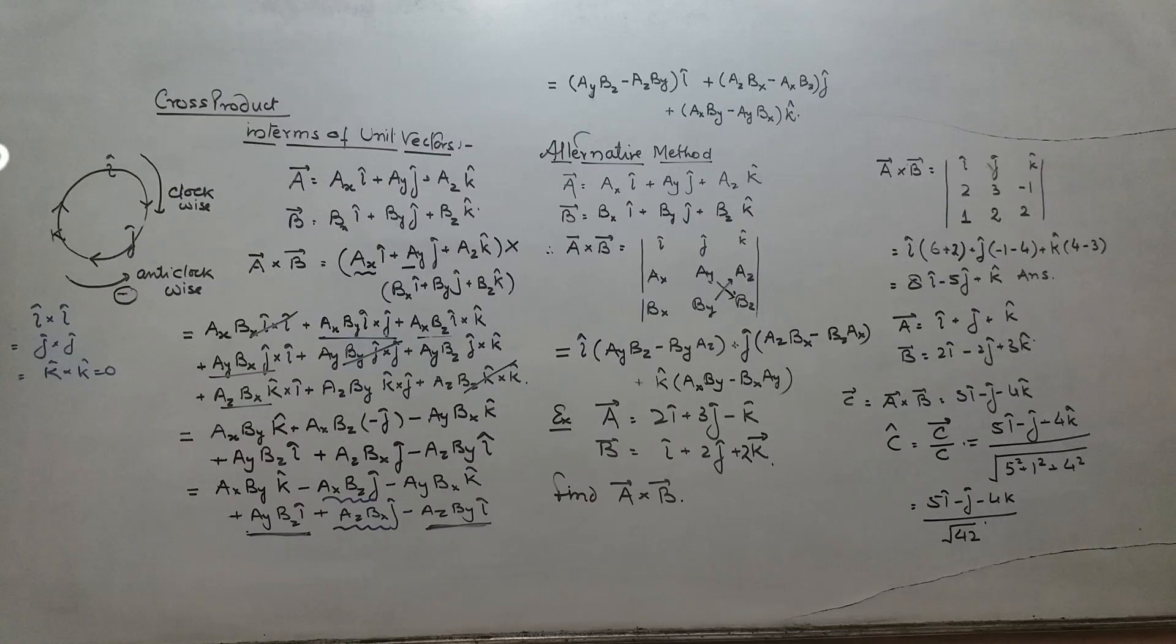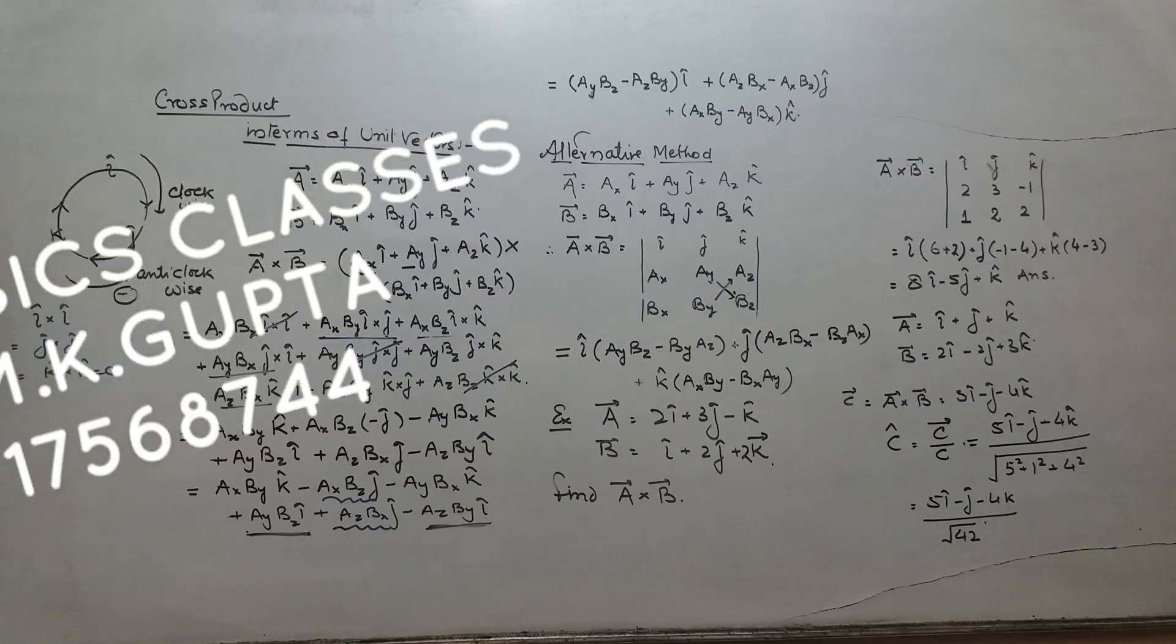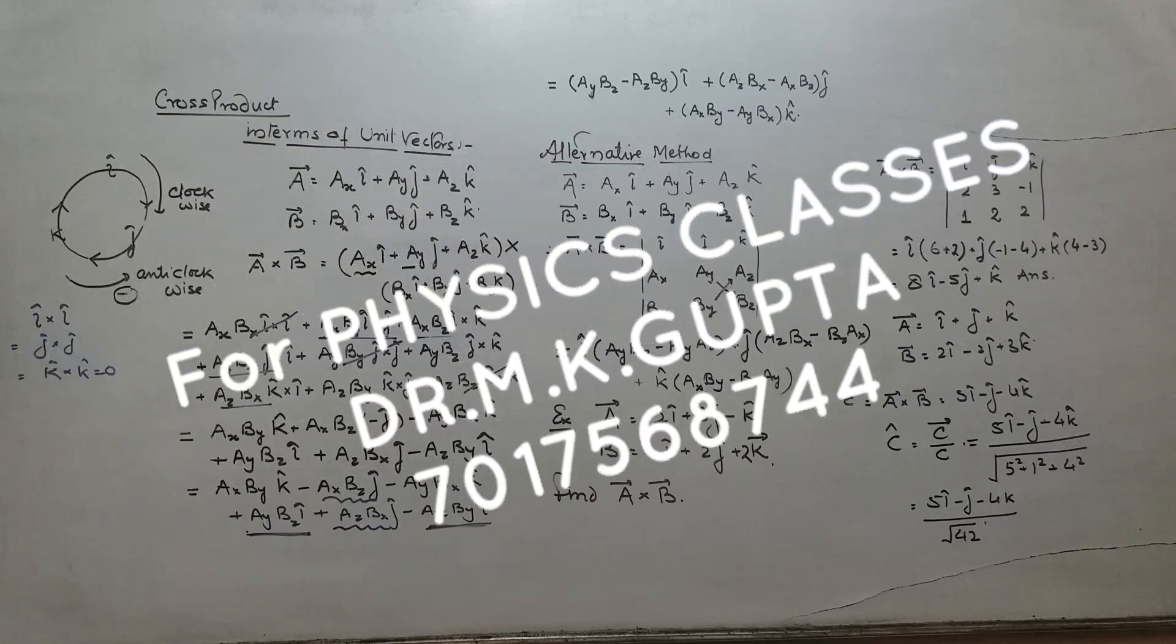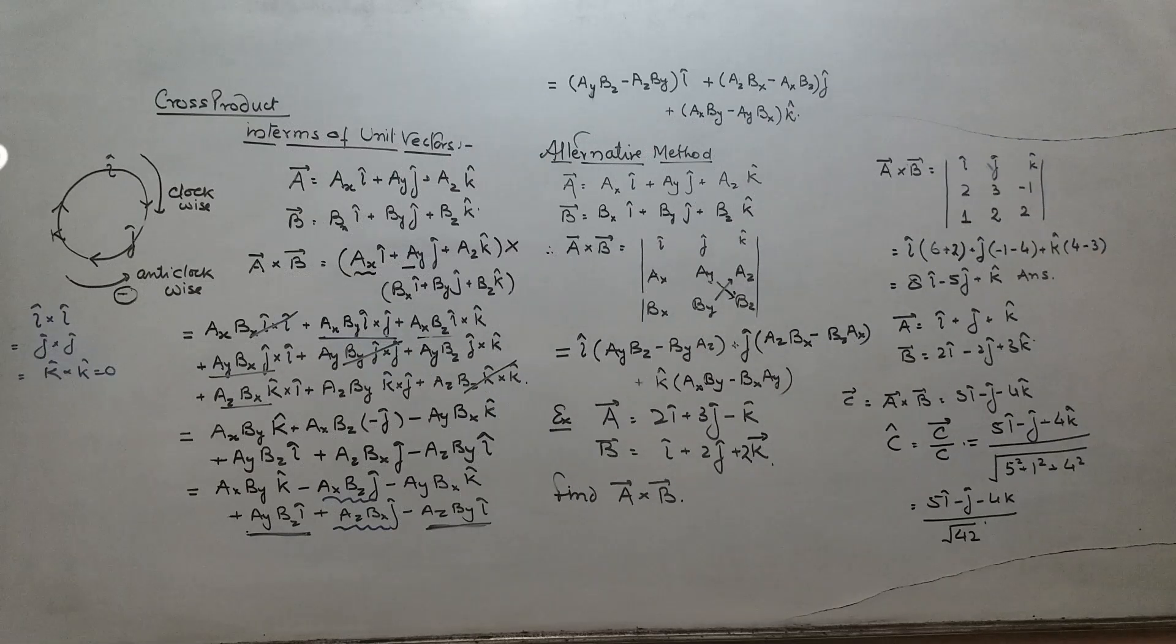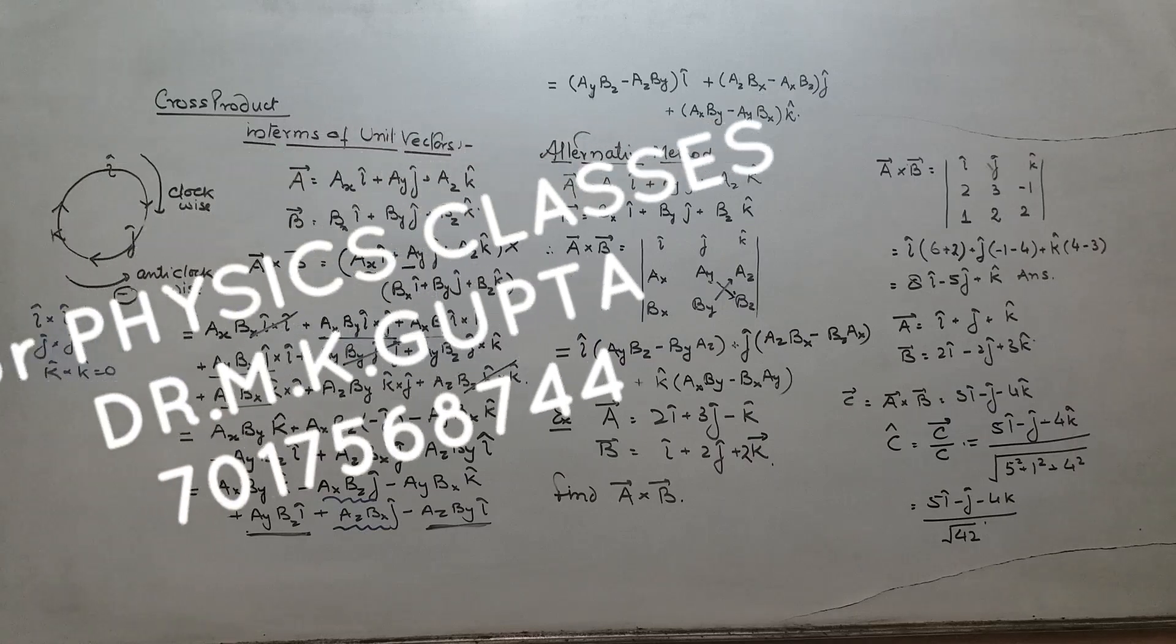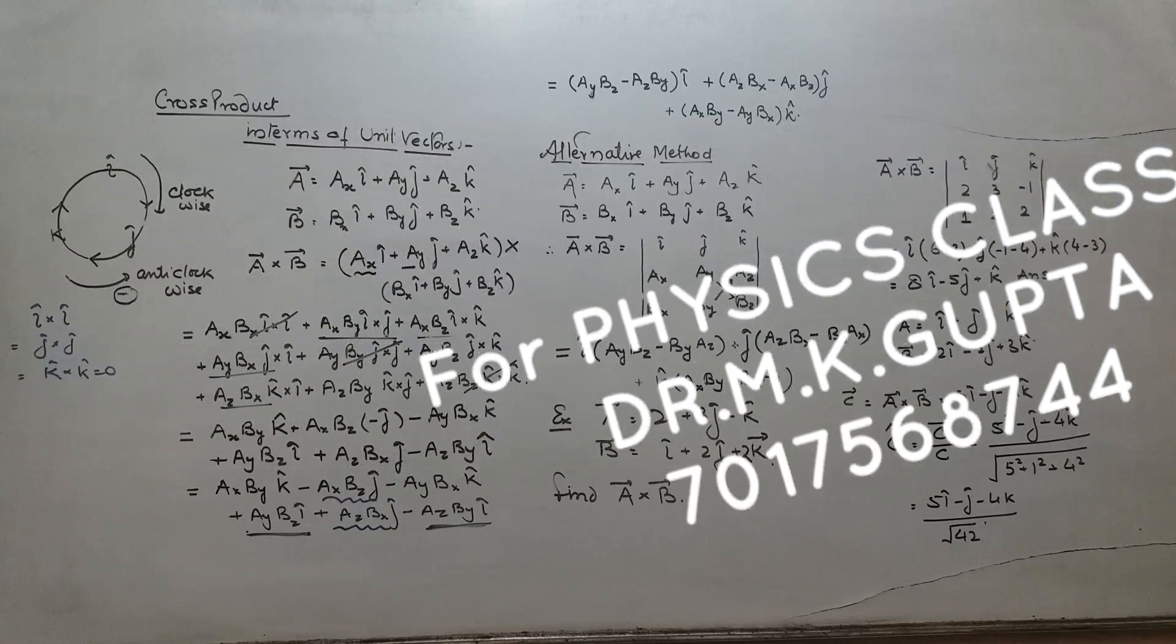Here i cross i or j cross j or k cross k equals to 0 and i cross j equals to k, j cross k equals to i and k cross i is equal to j.